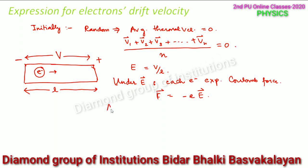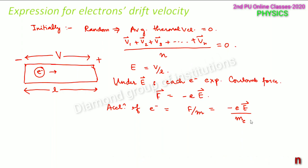So what would be the acceleration of each electron? The acceleration of the electron will be equal to force per unit mass, because force equals mass into acceleration. So acceleration will be equal to eE divided by m_e, where m_e is the mass of the electron. As soon as the electric field is applied, the electron gets strongly attracted towards the positive terminal and starts accelerating. The acceleration is given by minus eE divided by mass of electron.